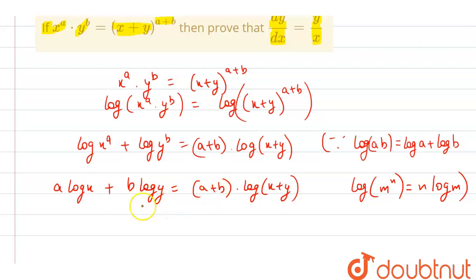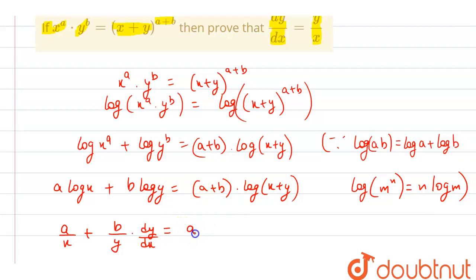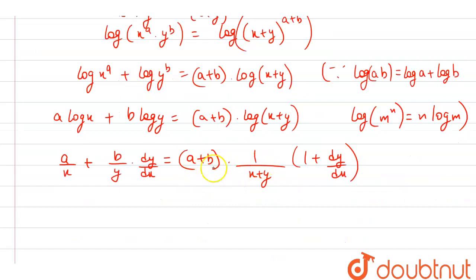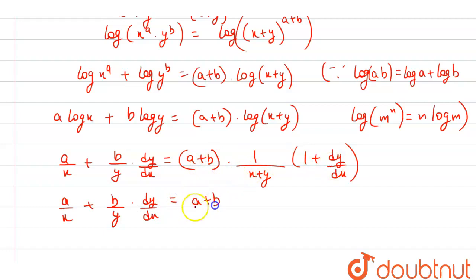Now differentiating both sides with respect to x: the left side gives a/x plus (b/y)·(dy/dx). On the right side, (a+b) outside, log(x+y) differentiates to 1/(x+y), and (x+y) differentiates to 1 + dy/dx. Multiplying out the bracket gives (a+b)/(x+y) plus (a+b)/(x+y)·(dy/dx).